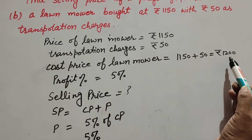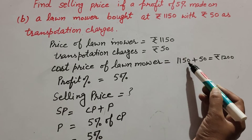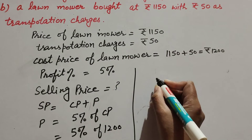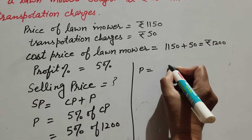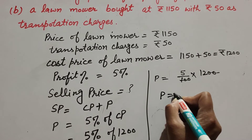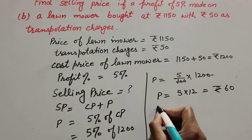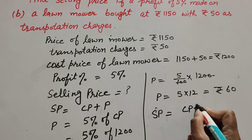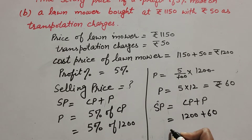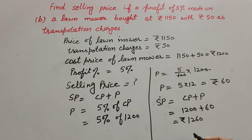Rupees 1200 is the cost price; 1150 is the price of the mower and they spent 50 rupees on transportation, so the total cost price of the lawnmower is 1200. Profit is equal to 5 percent of 1200 — five over hundred multiplied by 1200. The zeros cancel, so profit is equal to 5 multiplied by 12, which equals rupees 60. Now selling price equals cost price plus profit: 1200 plus 60 equals rupees 1260. So rupees 1260 is the selling price of the lawnmower.